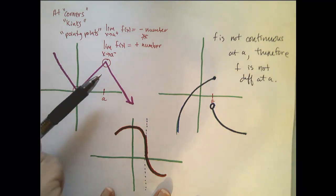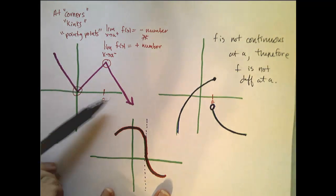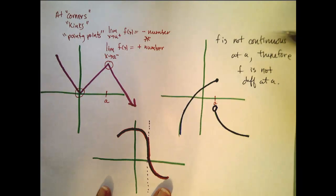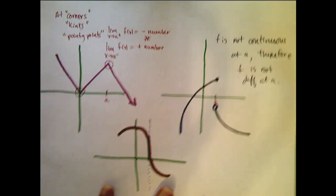At corners, or kinks, or pointy points, f is not differentiable. And at places where f is not continuous, f is not differentiable.